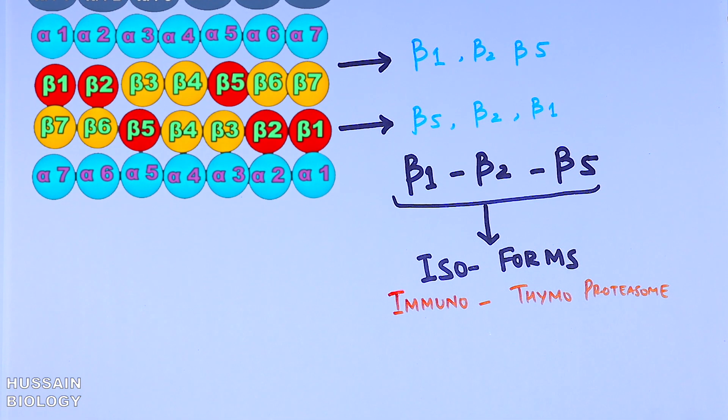It all starts from the 26s proteosome, either the 19s plus 20s form, or the 19s plus 20s plus 19s form, which is actually the 30s proteosome.